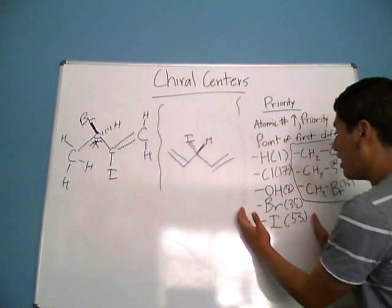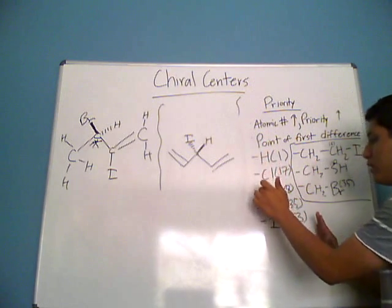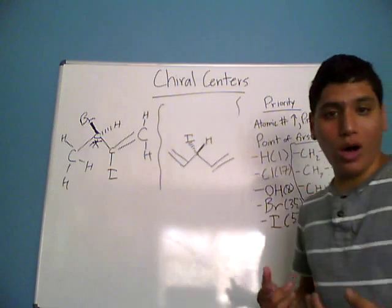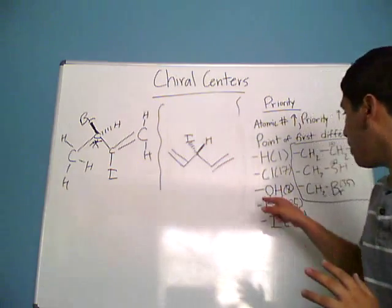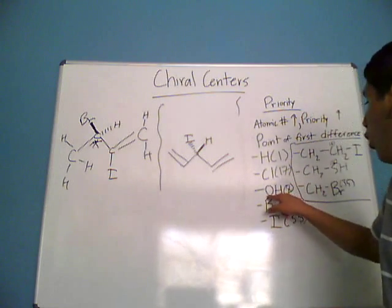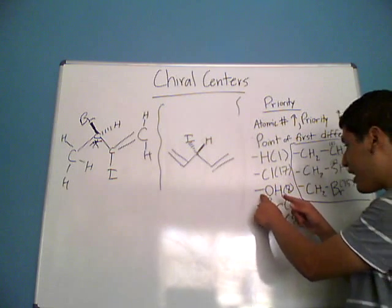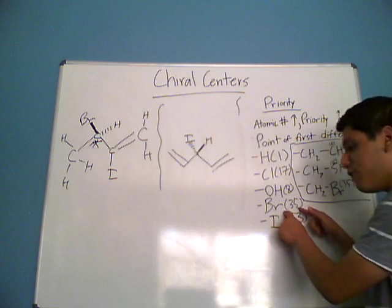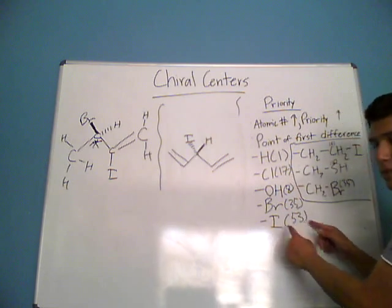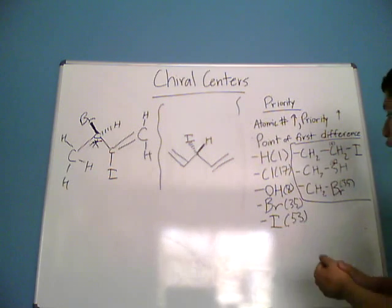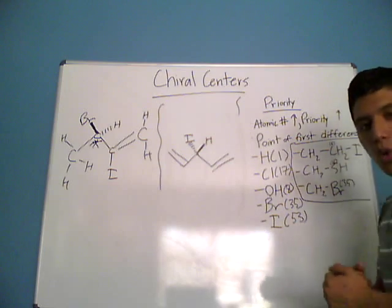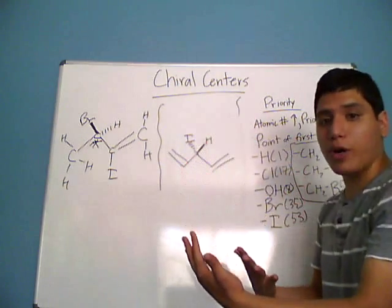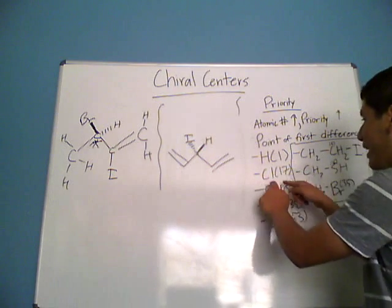We're going to look at these five substituents: hydrogen, chlorine, the OH group, bromine, and iodine. Hydrogen has an atomic number of 1 — the lowest possible. Chlorine has an atomic number of 17. For OH, you look at the first atom, oxygen, with an atomic number of 8. Bromine has atomic number 35, and iodine has atomic number 53. Iodine has the highest priority, hydrogen has the lowest. From greatest priority to least: iodine, bromine, chlorine, OH, and hydrogen.